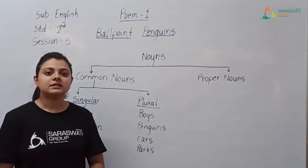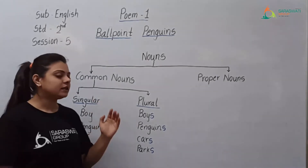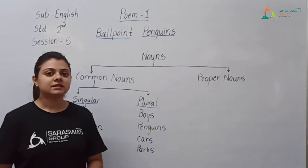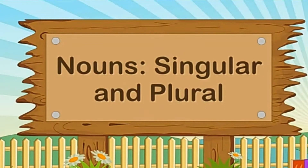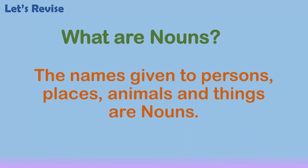Let us remember that when it is one, it is singular. And when there are many, it is plural. A noun can refer to one or more than one. We have already learnt about nouns, so let's revise. What are nouns? The names given to persons, places, animals and things are nouns.